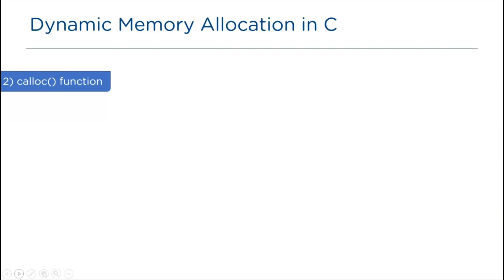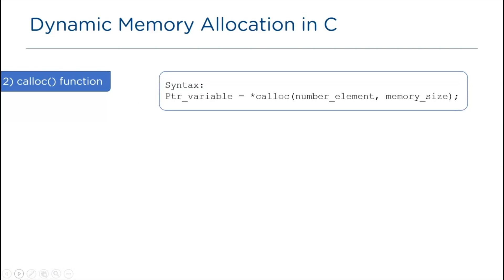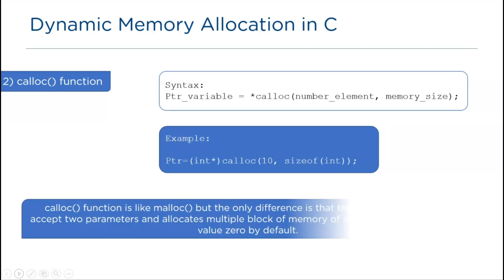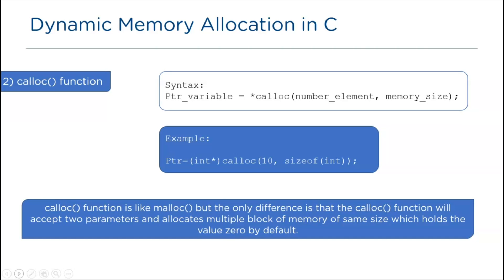Next we have the calloc function. The syntax is: pointer_variable = calloc(number_elements, memory_size). For example, 10 as the number of elements and sizeof(int) as the element size. calloc is similar to malloc, but in calloc multiple blocks of memory of the same size are allocated, which hold 0 by default. It takes two arguments: number of elements and element size.